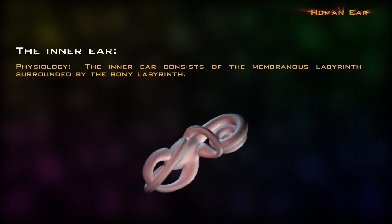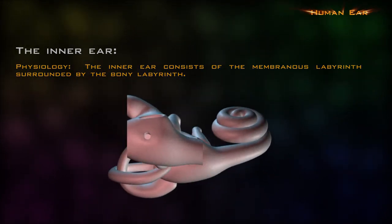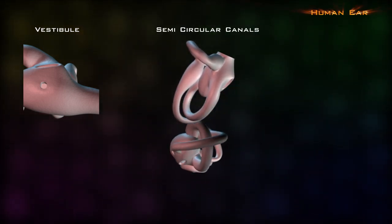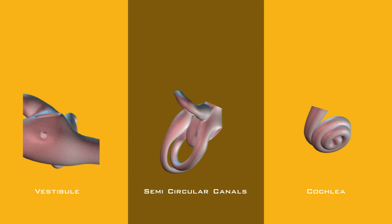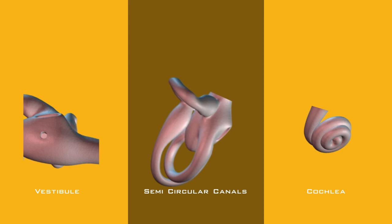The inner ear consists of membranous labyrinth surrounded by the bony labyrinth. The bony labyrinth consists of the vestibule, the semicircular canals and the cochlea. The vestibule is a chamber in the centre of the bony labyrinth which communicates with both the cochlea and the semicircular canals. The oval and the round windows are both located in the lateral wall of the vestibule. The semicircular canals contain the semicircular ducts which have arisen from the utricle of the vestibular labyrinth.